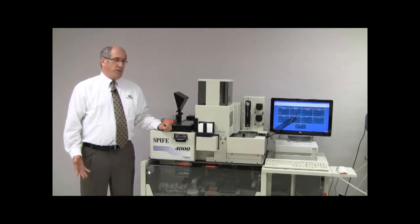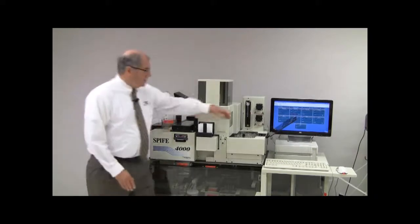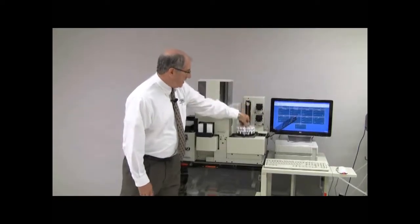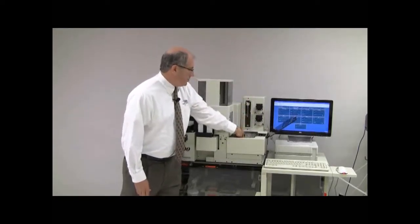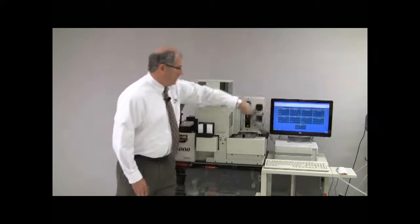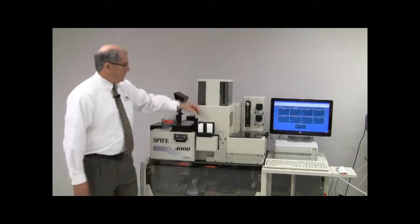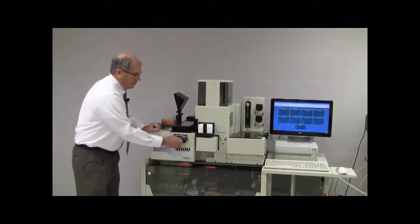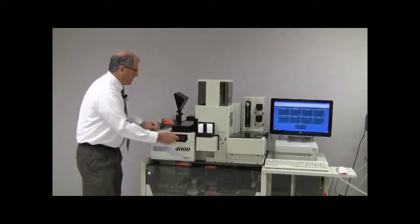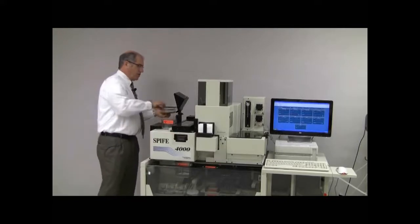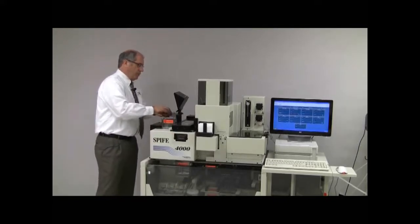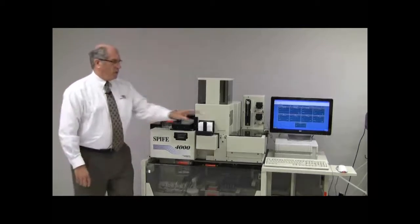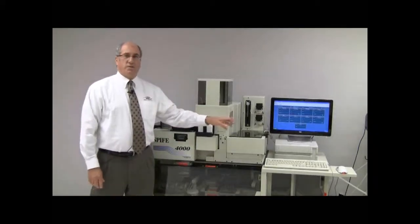The operation is very simple. The operator loads the sample tubes into the carousel, places the carousel onto the turntable, closes the cover, loads sample trays into the holder, loads blades into the holder, closes that up, and loads the gels into what we call a humidor, closes the cover, walks over here, and simply presses the start button.